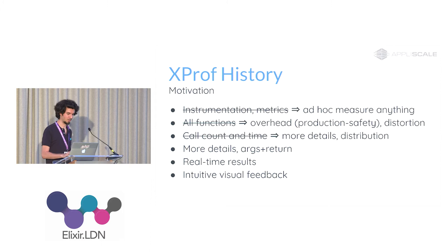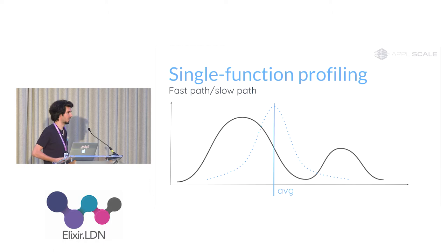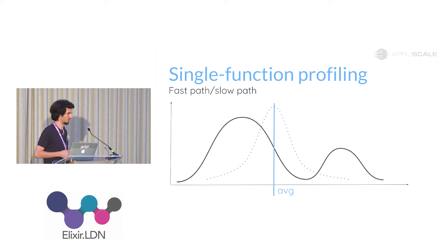That's how X-Prof was born. Single function profiling allows us to gather more data about that one function's duration, because very often there is a fast path and a slow path depending on arguments. Looking at just the average hides this. There can be outliers that take a lot of time, and if one user gets a very long response, they'll be unsatisfied even if the average is good. So it's very important to observe high percentiles and maximum values in a live system.